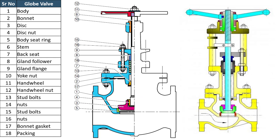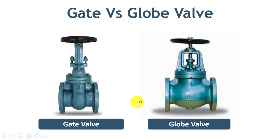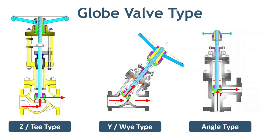These shapes make it easier to identify the globe valve in the field. If you have seen the gate valve video, then you can see the difference in the body shape. But this design is only applicable for Z-type globe valve. For other types of globe valve, the body shape is different, but still you can easily identify them. Let's see how.